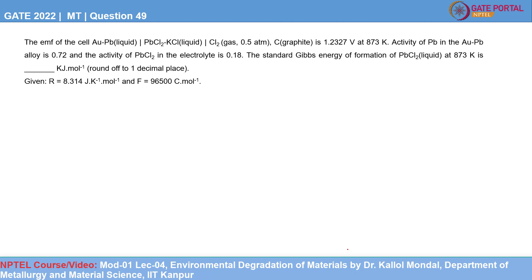Gate 2022 Metallurgical Engineering Question 49. The EMF of the cell is 1.2327 Volt at 873 Kelvin. Activity of lead in gold-lead alloy is 0.72 and activity of lead chloride in electrolyte is 0.18. The standard Gibbs energy of formation of lead chloride at 873 Kelvin is to be found. The universal gas constant is 8.314 J/mol·K and Faraday's constant is 96500 Coulombs per mole.